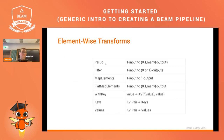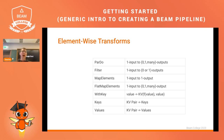There is a list of predefined element-wise transforms including ParDo, Filter, MapElements, and FlatMapElements. There are also element-wise transforms for key-value pairs, such as extracting just the keys or just the values from a key-value pair as output.